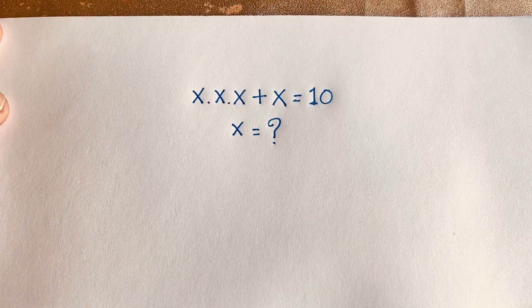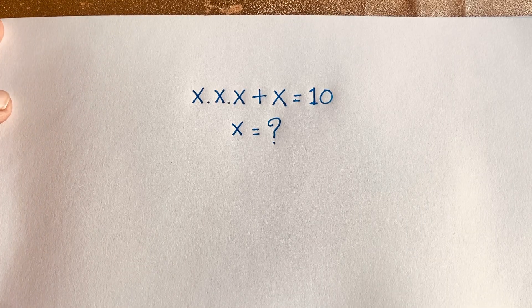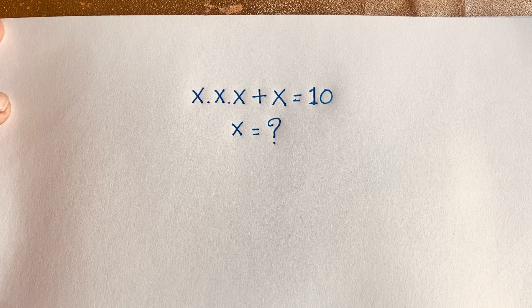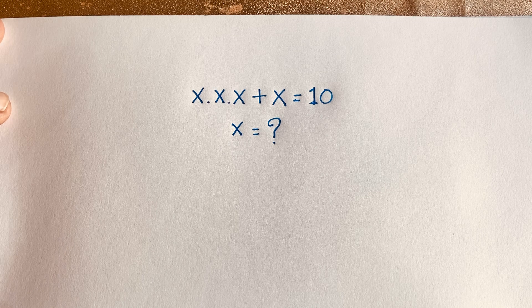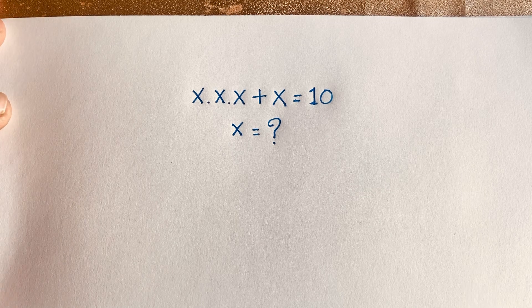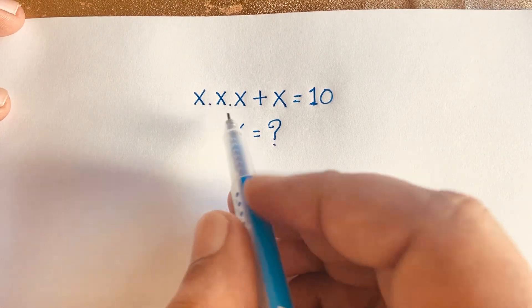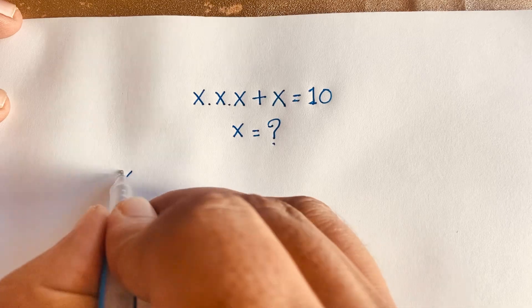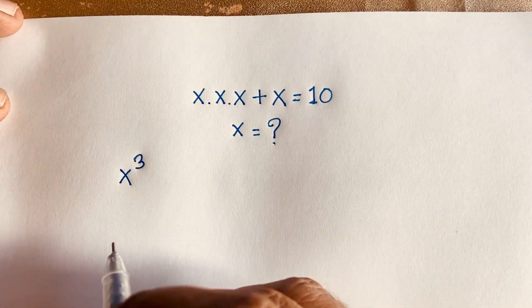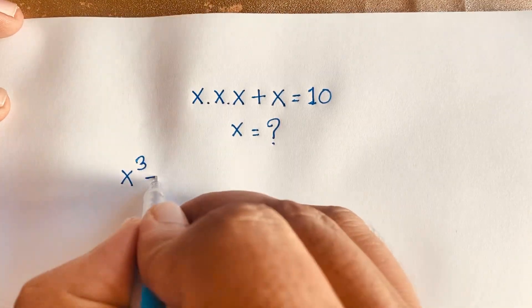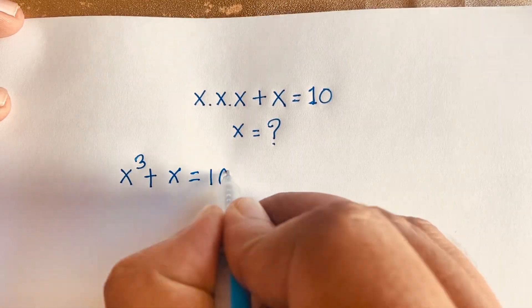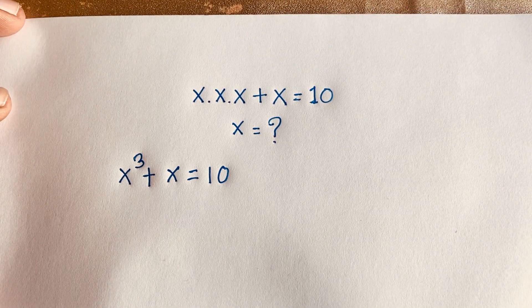Hello everyone. In this video we have solved this interesting math alphabet question. The question is x times x times x plus x is equal to 10. x is equal to what? How to solve this math question? First of all, I can see easily this question: x times x times x will be x to the power 3, and here is plus x is equal to 10.